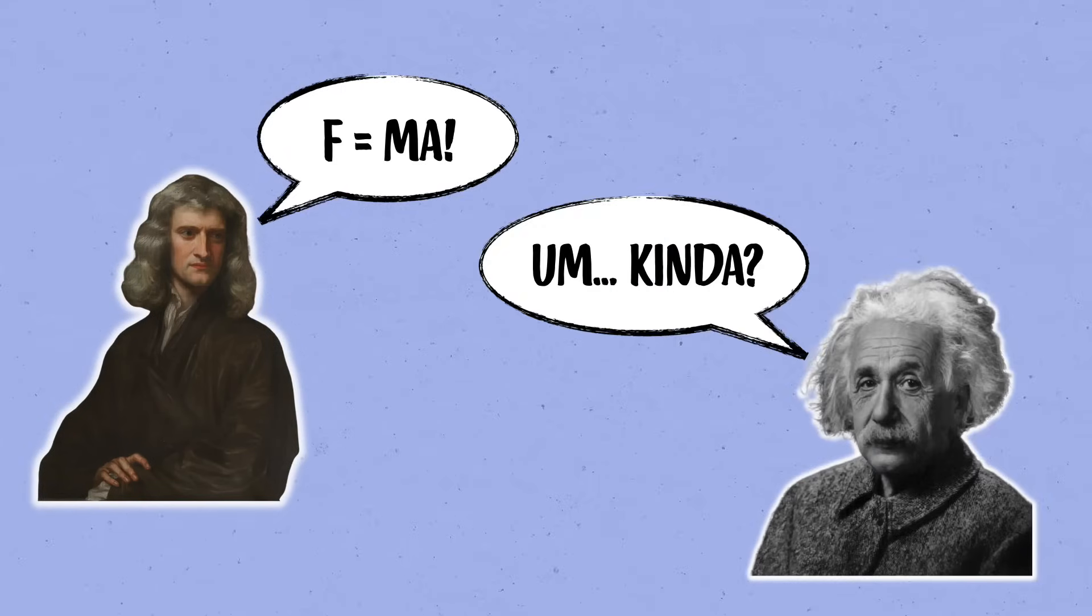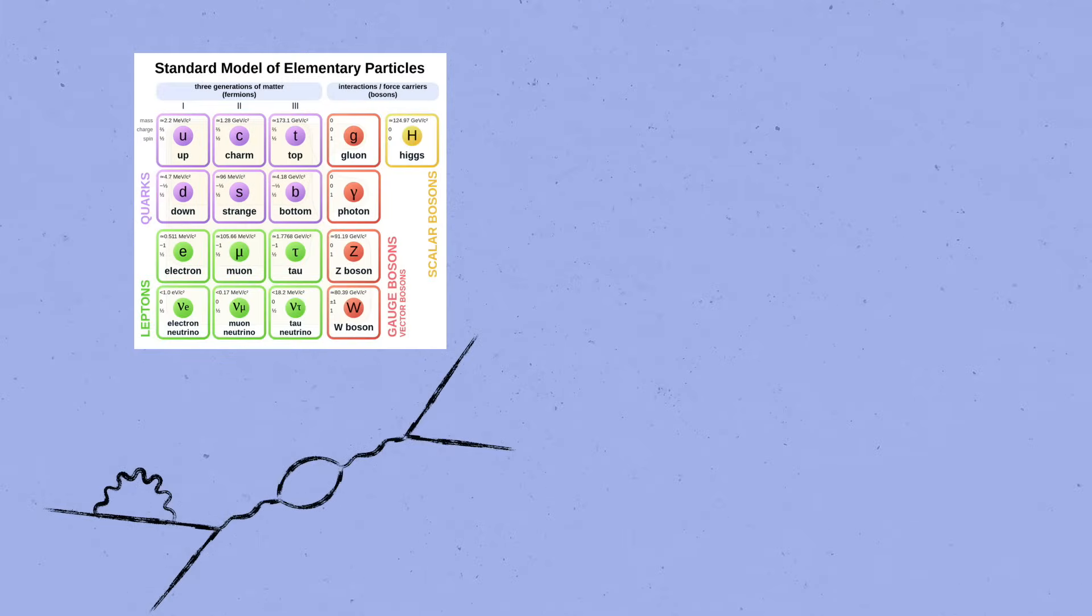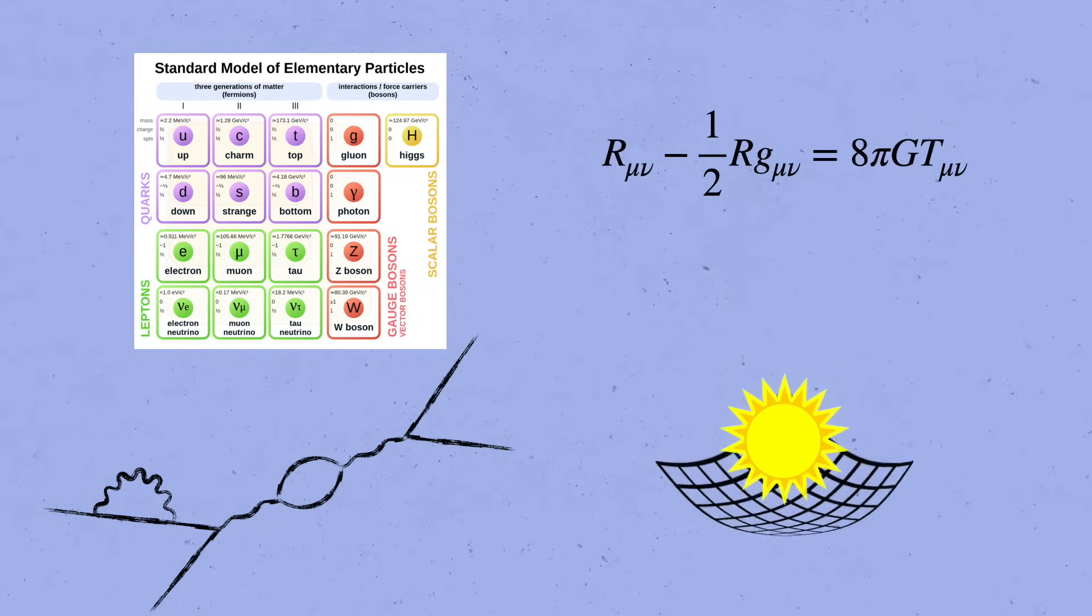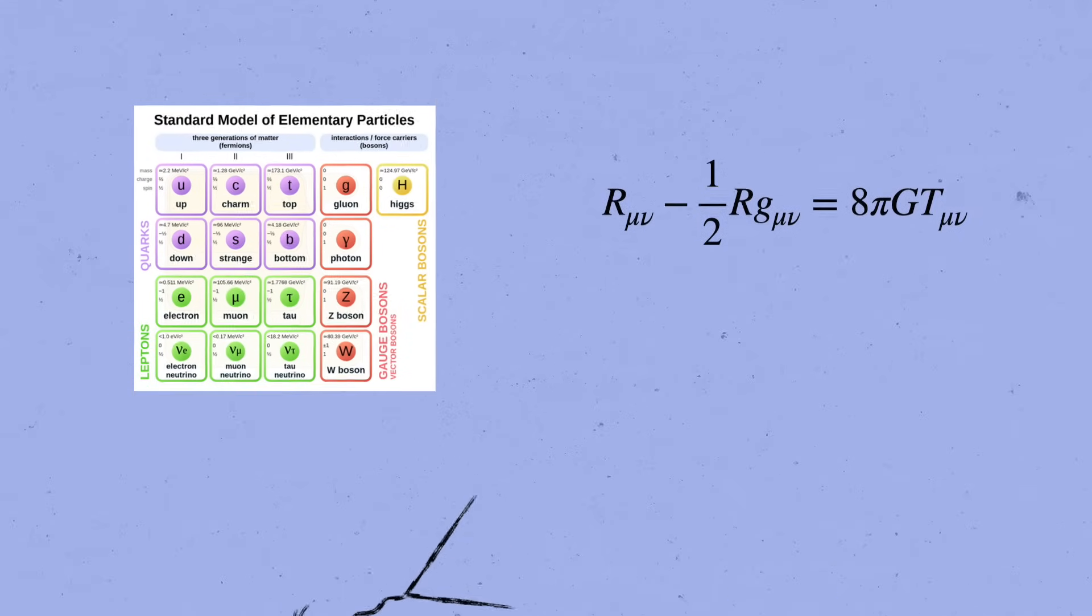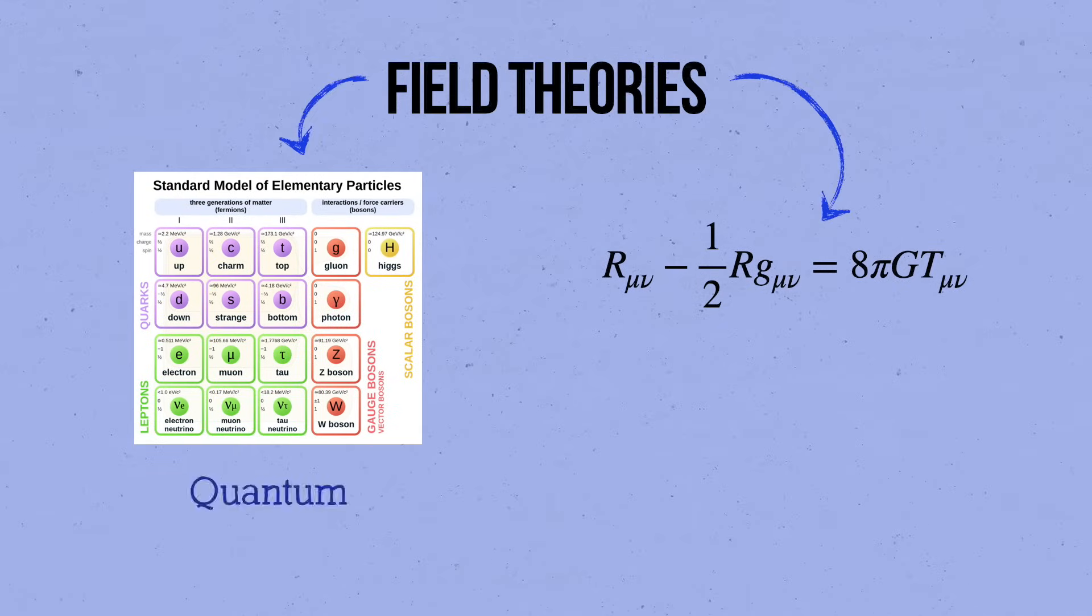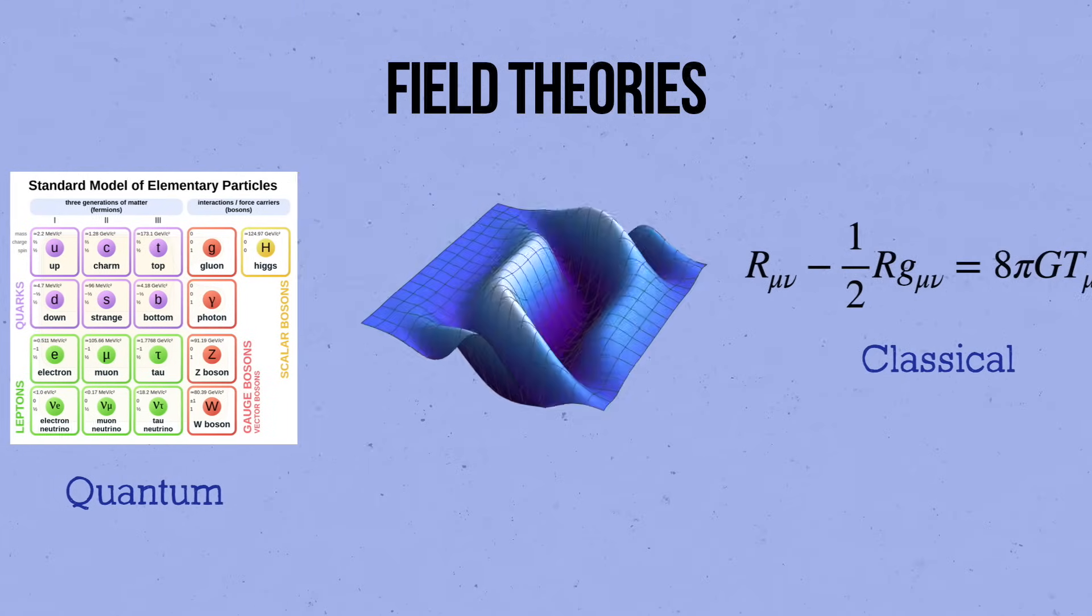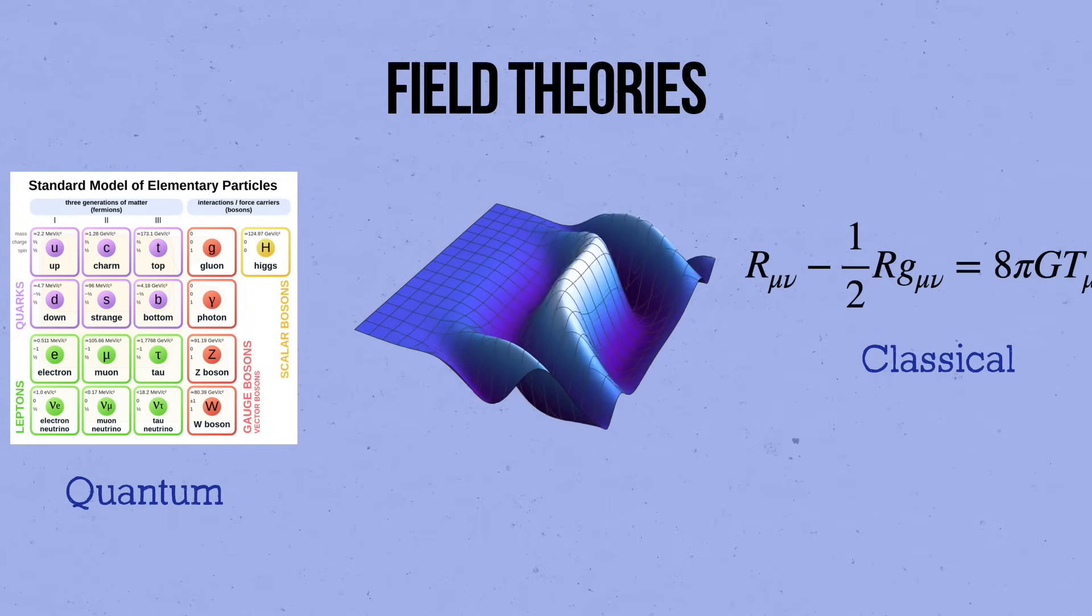In the 300 and some years since the scientific revolution, the two deepest theories of nature that human beings have written down are the standard model of particle physics and Albert Einstein's theory of gravity, general relativity. Both are examples of field theories, quantum in the first case and classical in the second, which describe the laws of nature in terms of fluctuating fields that permeate space and time.